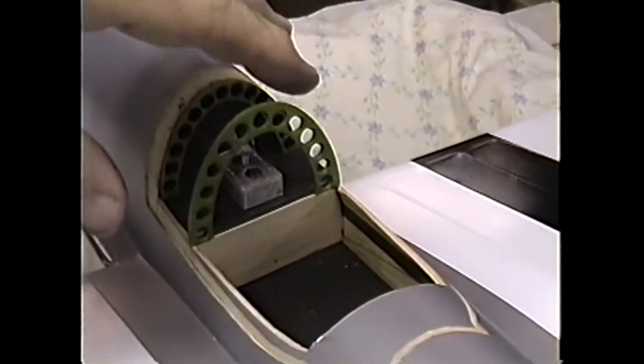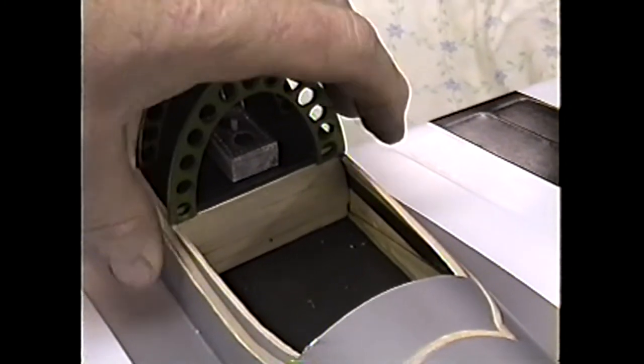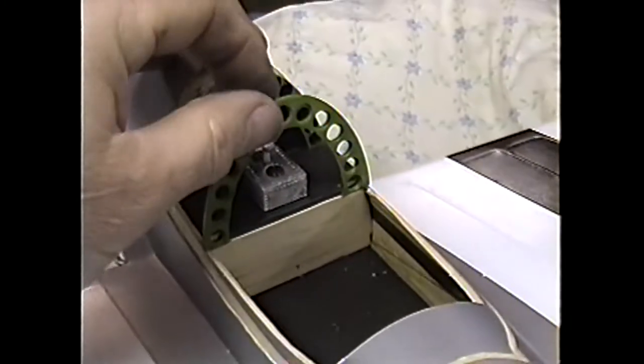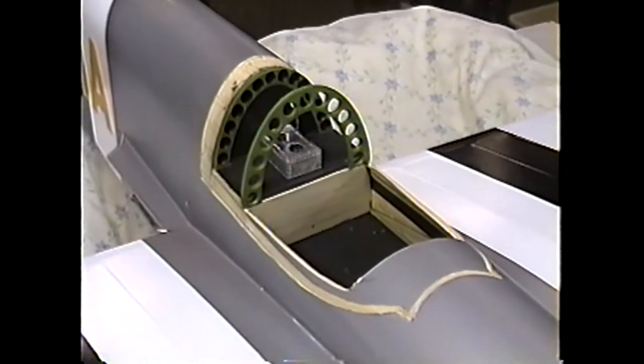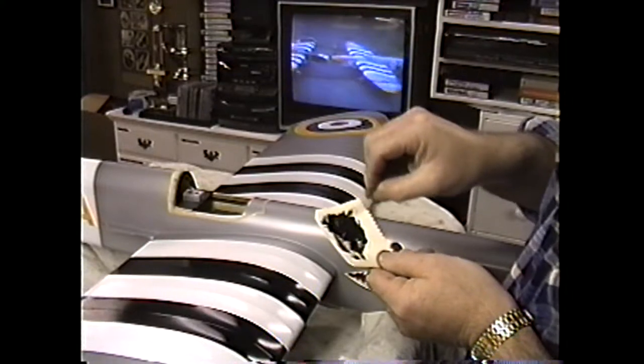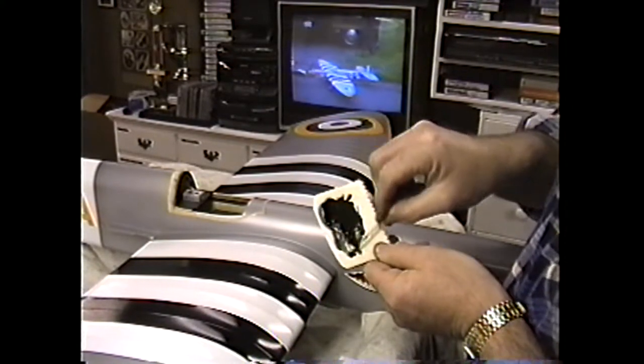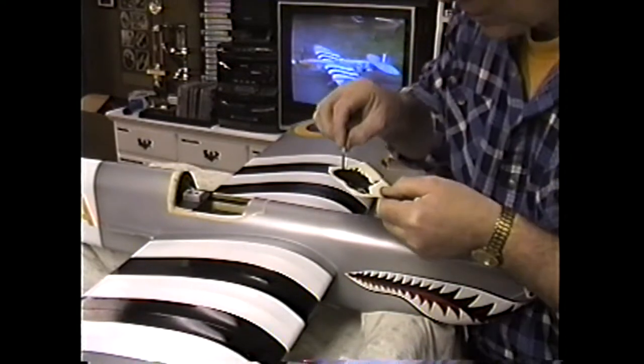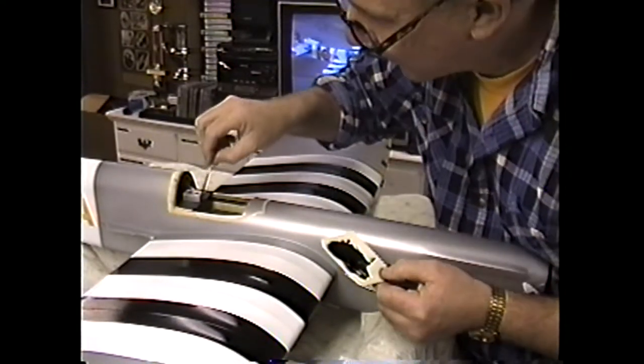Now before I glue this in I want to make sure when I drop the canopy on I have the alignment that I really want. This is one of those areas I want to have a little bit of black dye in the epoxy in case any of it oozes out. I don't have to look at a big glob.